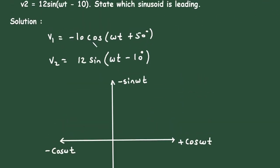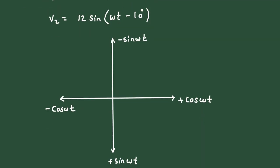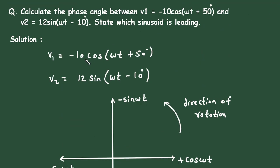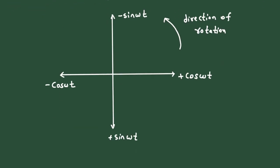Now we want to convert minus cosine into plus cos(ωt). The phasor rotates in the counter-clockwise direction. If we go from minus cos to plus cos, the angle is 180 degrees, but since we are going in the opposite direction of rotation, that means we add minus 180 degrees.